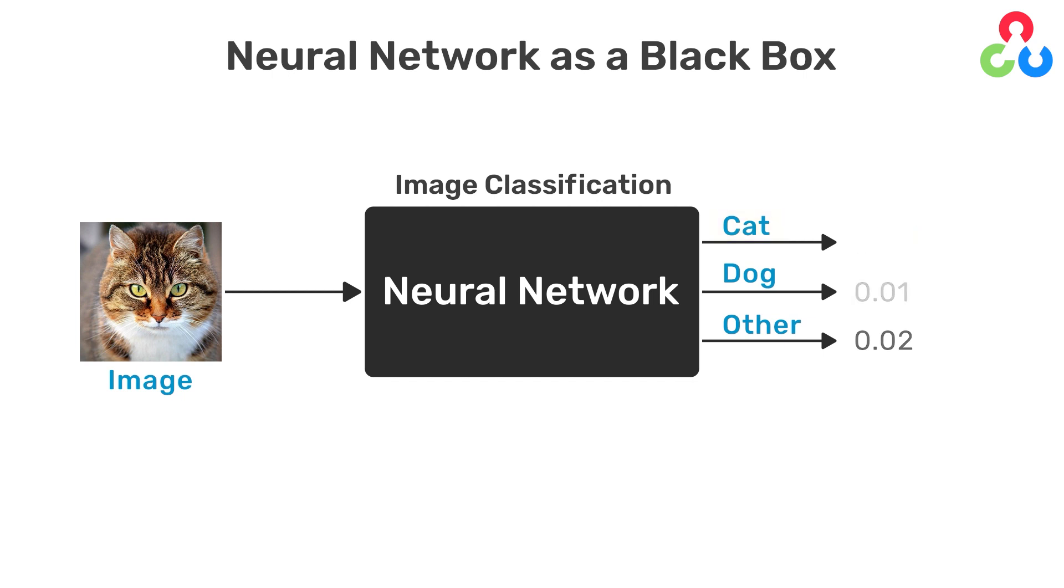So if the outputs were 0.51, 0.48, and 0.01 respectively, we would still assign the predicted label as a cat, since 0.51 still represents the highest probability from all three categories, although in this case the network is less confident about the prediction.